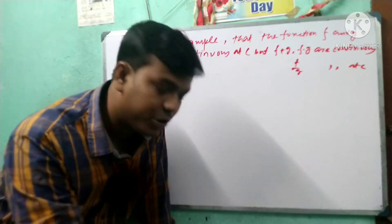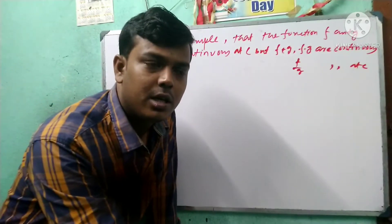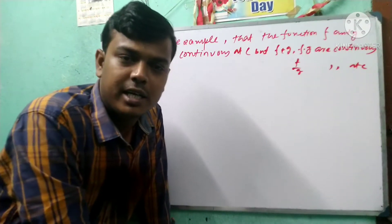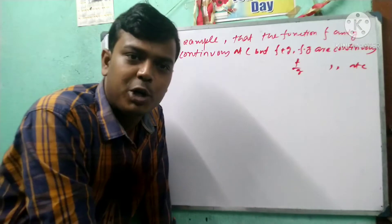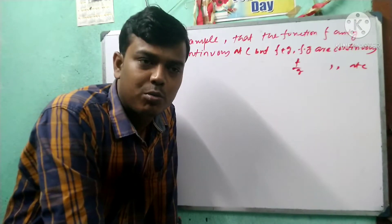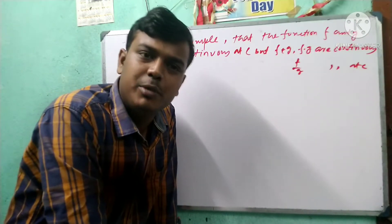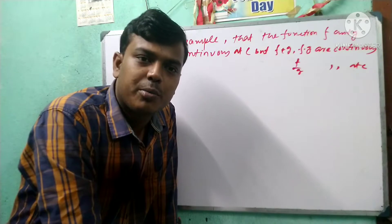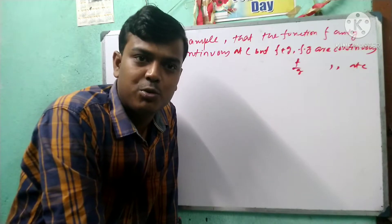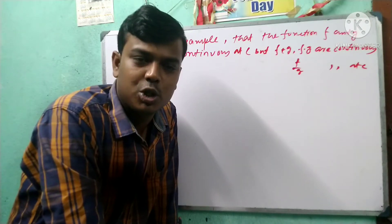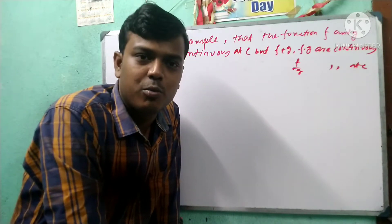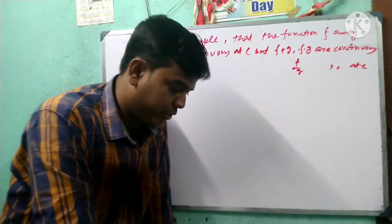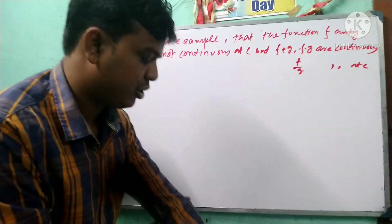The continuity condition is: the function is continuous at a point C if the limit of the function at C equals the function value. So we say the function is continuous.